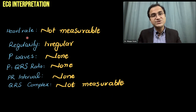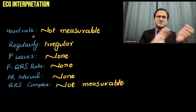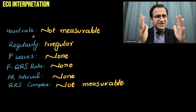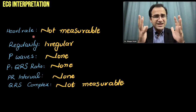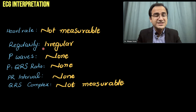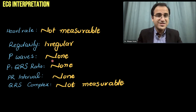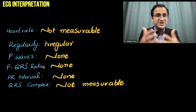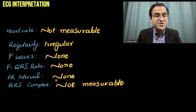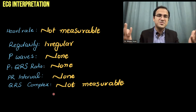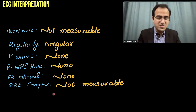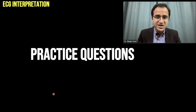The normal characteristics of ventricular fibrillation on ECG: heart rate is not measurable because there is no pulse and the ventricles are seizing. Regularity is irregular. P waves are absent. The P-to-QRS ratio cannot be measured. PR intervals are absent. QRS complexes are not measurable. It is an irregular abnormal rhythm.